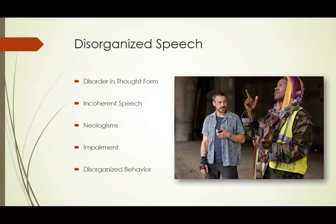Observers note that the person is not themselves anymore. It impairs their daily functioning. Focusing on behavior: they have personal hygiene issues, profound disregard for personal safety and health, grossly disorganized behavior — it may be silly or unusual dress, like wearing an overcoat, scarf, and gloves on a hot summer day. Schizophrenia is possibly the most debilitating illness that a person can have. Onset is normally 18 to 25 years of age.